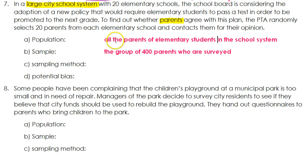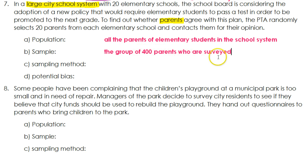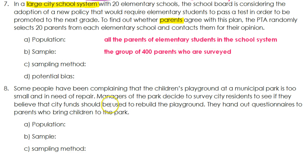So the population is all the parents of elementary students in the school system. Now the sample — we know exactly how many parents are in the sample: there will be 400 parents. Because there are 20 elementary schools and we are going to question 20 parents from each school, so 20 times 20 is 400. The sample is the group of 400 parents who are surveyed.